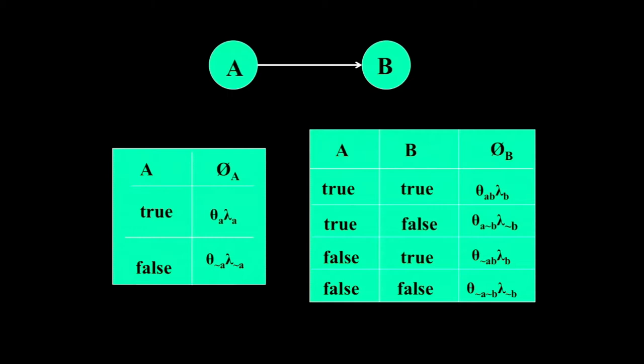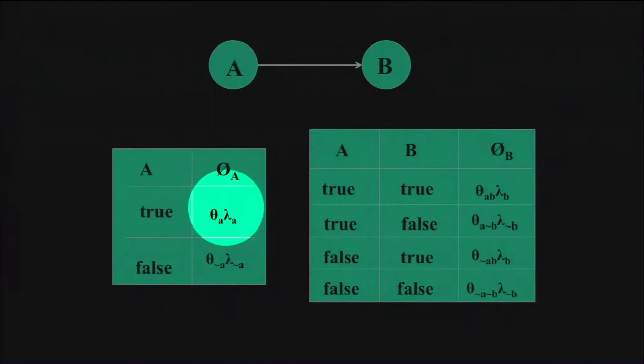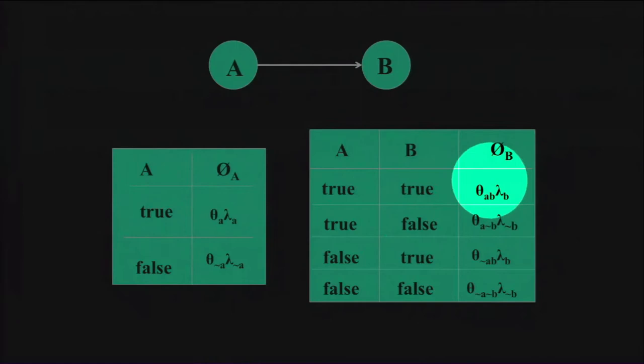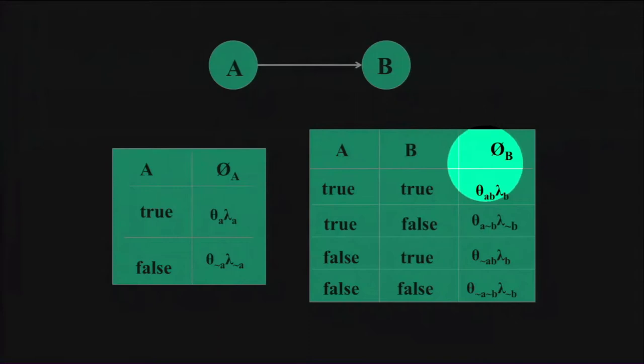If you look at the CPT for A, when A was true, we put theta sub A — the symbolic variable representing that parameter — and the indicator for that value, and similarly for the other entries. For B, we include the indicator for the variable corresponding to each row of the CPT, together with the parameters that correspond to that particular row.